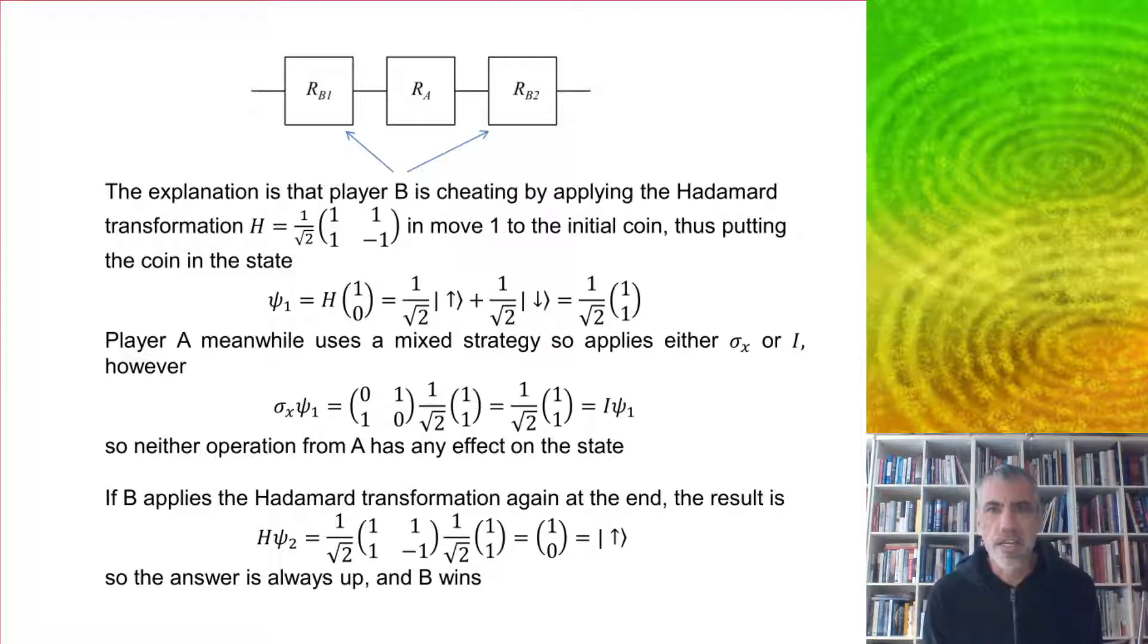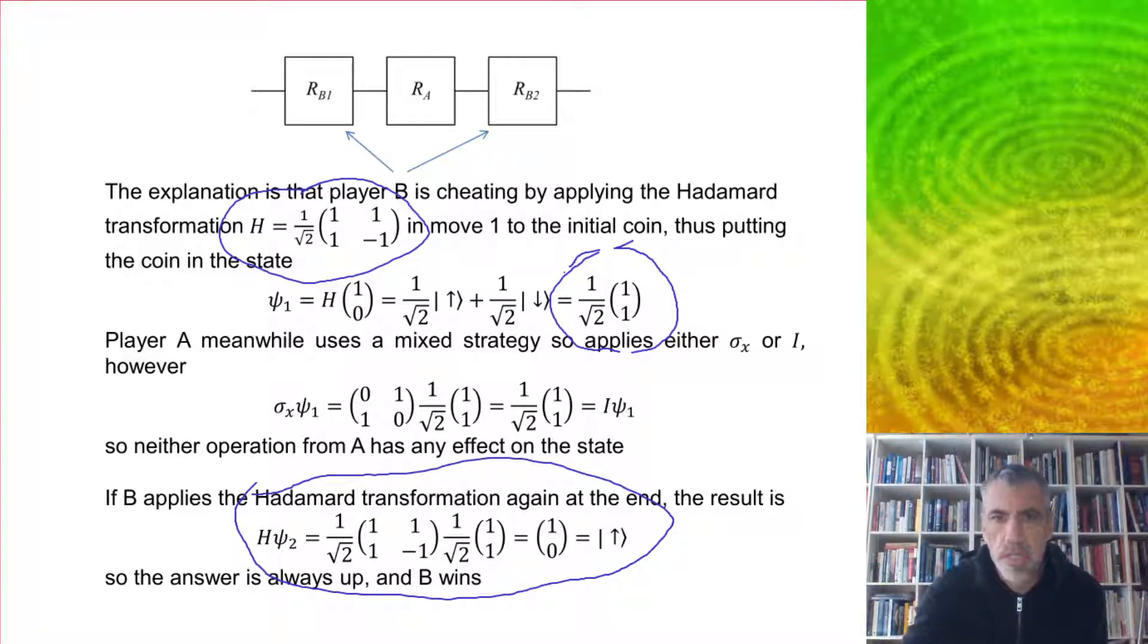It's that player B is cheating by applying the Hadamard transformation in move one to the initial coin, thus putting the coin into the superposed state. What happens is that player A is using a mixed strategy. They're going to apply either a flip or not flip. But either flipping or not flipping has no effect on the superposed state. Neither does anything. And then player B gets to apply the Hadamard transformation again at the end, because they get the last move. And so that has the effect of always putting the coin back in the up state. So the answer is always up, and B wins.